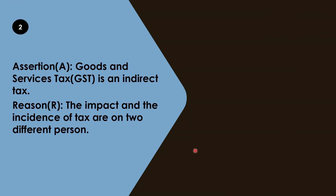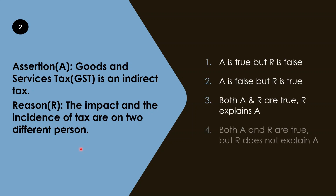Question 2 is an assertion-reason based question. This is something CBSE has introduced recently, so you may not get too many to practice. Please pay attention. When you look at the first statement, you have to check whether it is true or false, and the second statement tells you whether it explains the first. The options are typically: A is true R is false, A is false but R is true, or both A and R are true and R explains A.